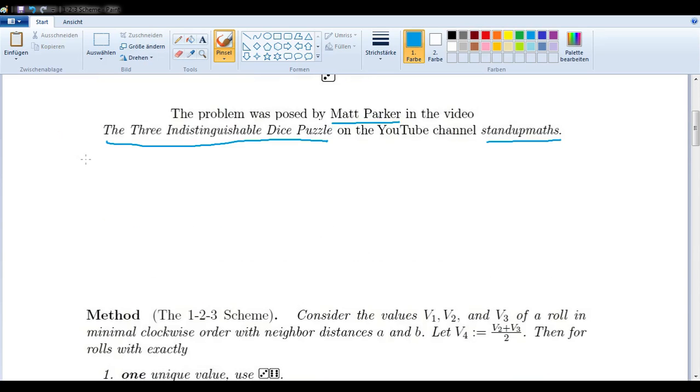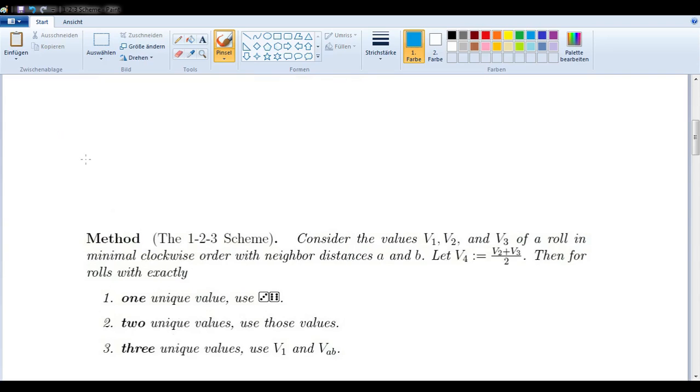And here is the one we want to present today, the 1-2-3 scheme. We're dealing with a roll of three dice in a certain order, which we're calling the minimal clockwise order. We'll explain that in a moment. There are some neighbor distances A and B, which we will also explain in a moment, and we have a fourth value which is just the average of the second and third values.